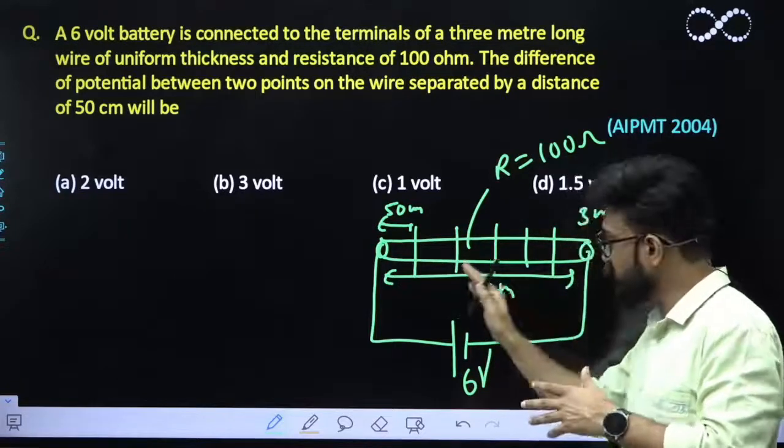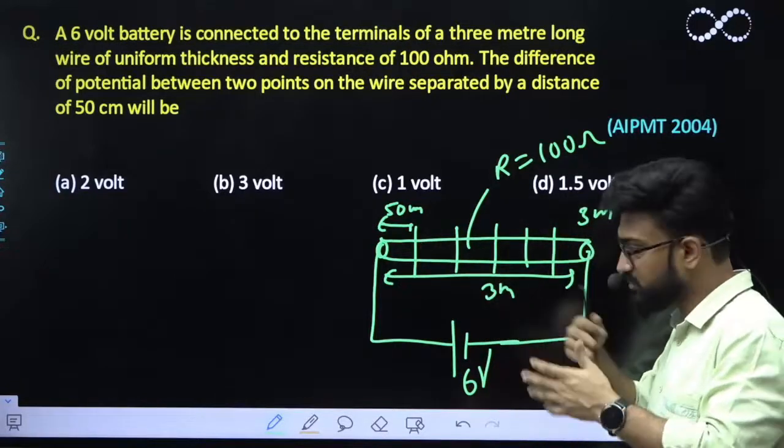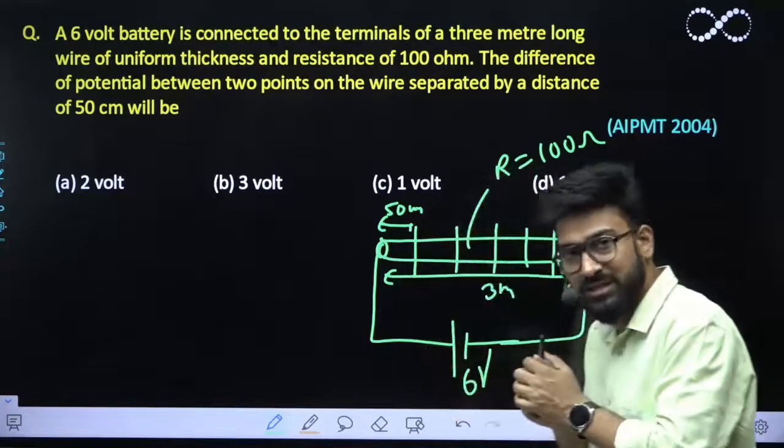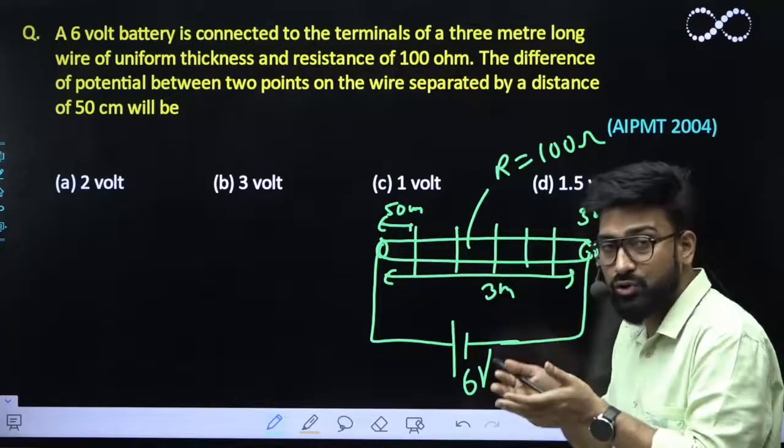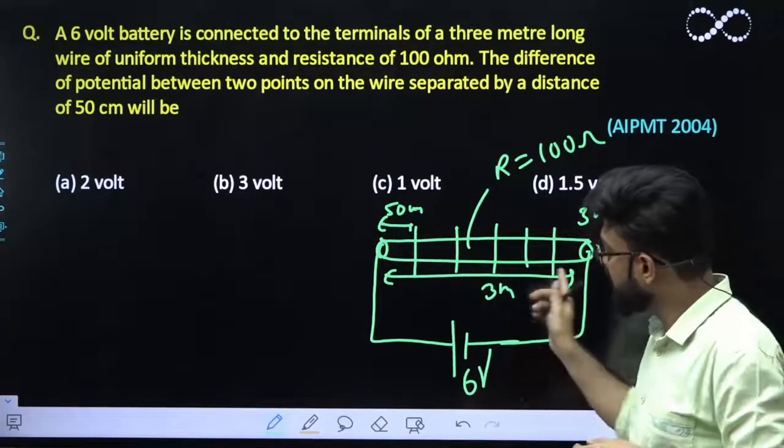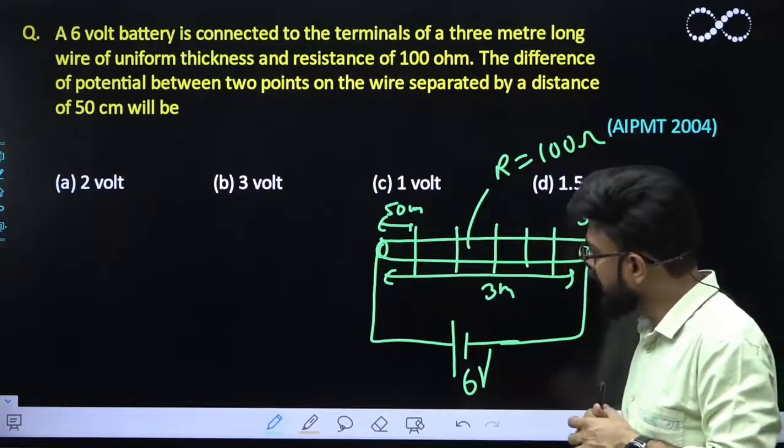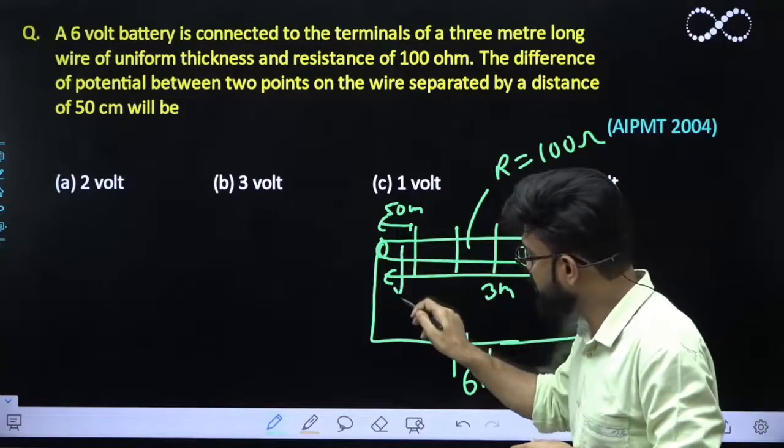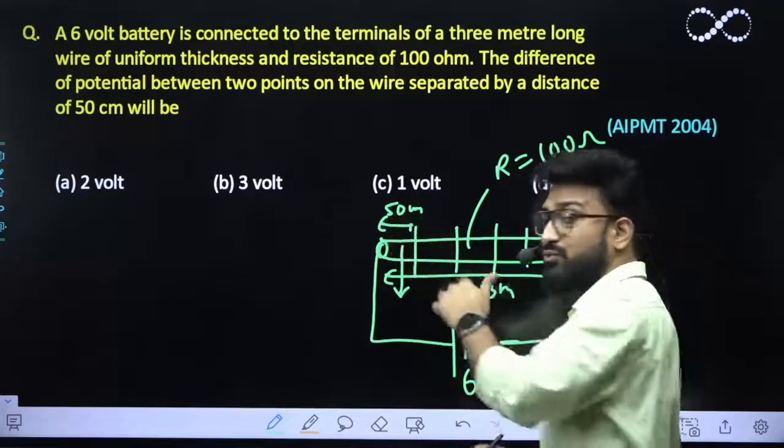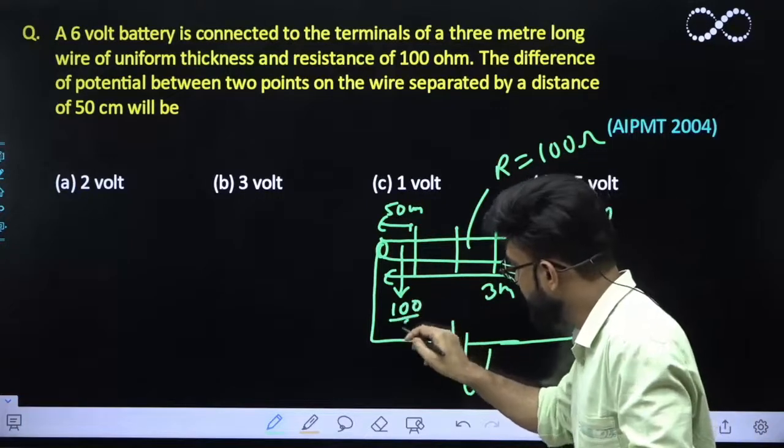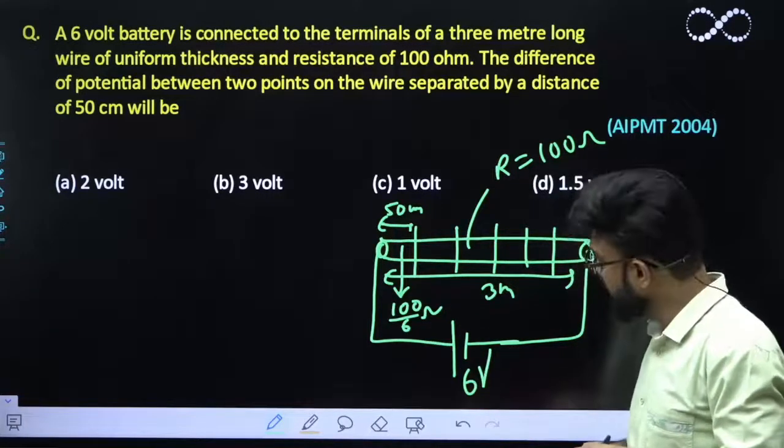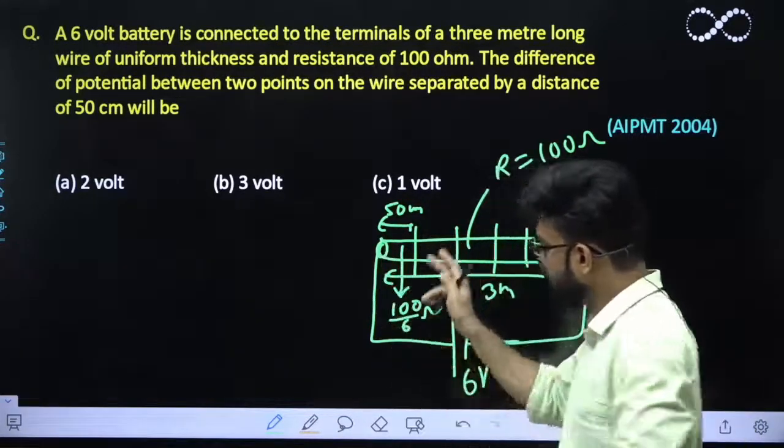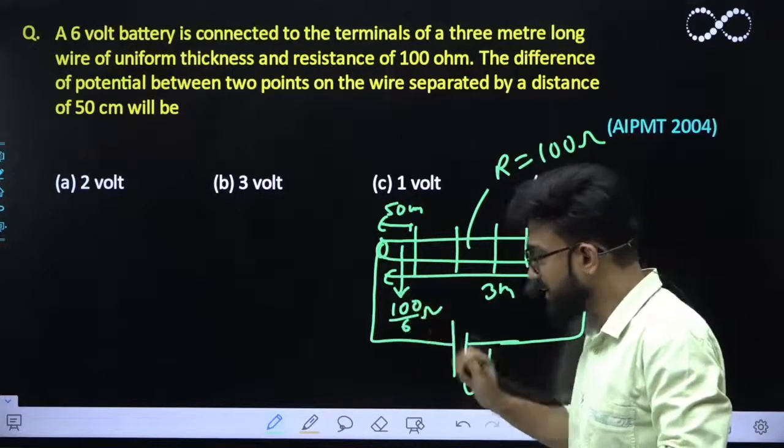Because the length is 3 meters, if it is divided into 6 proportions, the length would also become 1 by 6 times. Since it has uniform cross sectional area and resistivity would also be similar, each small portion of the wire whose length is 50 centimeter would have a resistance of 100 by 6 ohm because it has been divided into 6 equal parts.